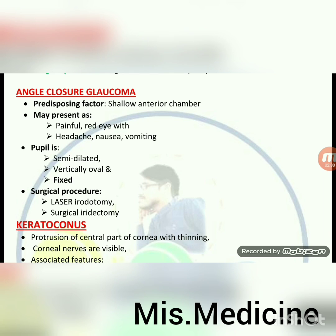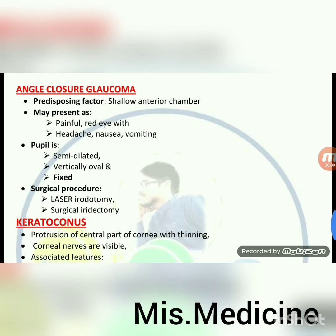Angle-closure glaucoma: predisposing factor — shallow anterior chamber. May present as painful red eye with headache, nausea, vomiting. Pupil is semi-dilated, vertically oval and fixed. Surgical procedures: laser iridotomy and surgical iridectomy.